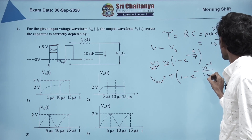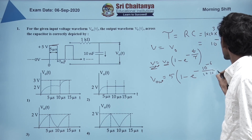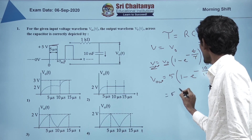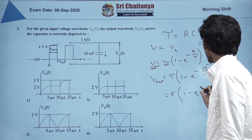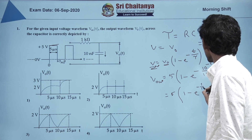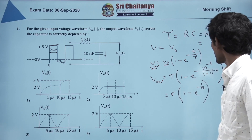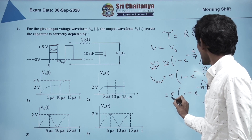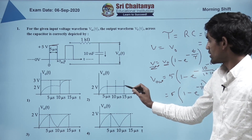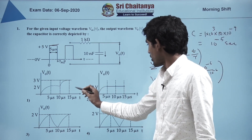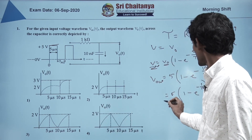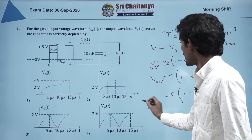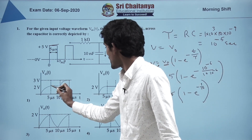The output is 5 into (1 minus e^(−10⁻⁶ / (10 × 10⁻⁶))), which gives 5 into (1 minus e^(−1/10)). So this will be less than 5. According to the given options, we can see that at the end of 5 microseconds it should be less than 5.